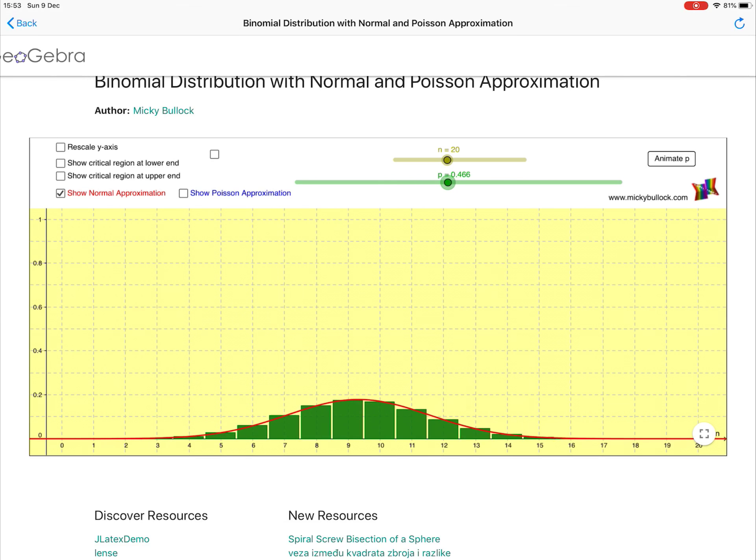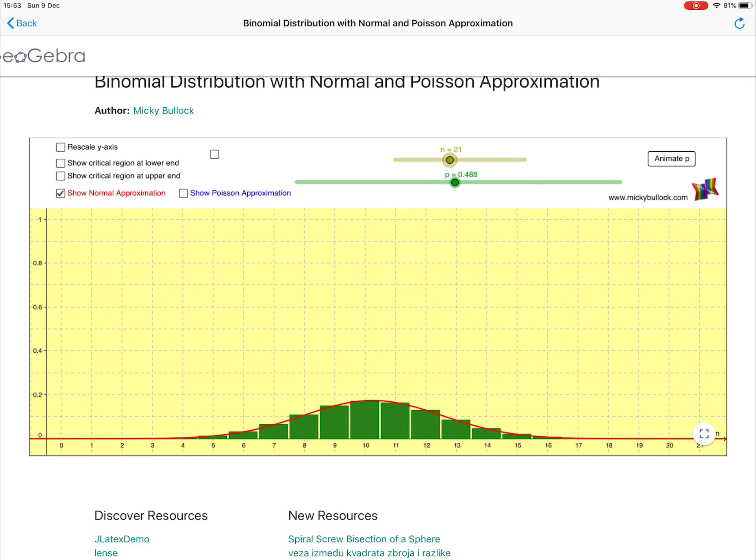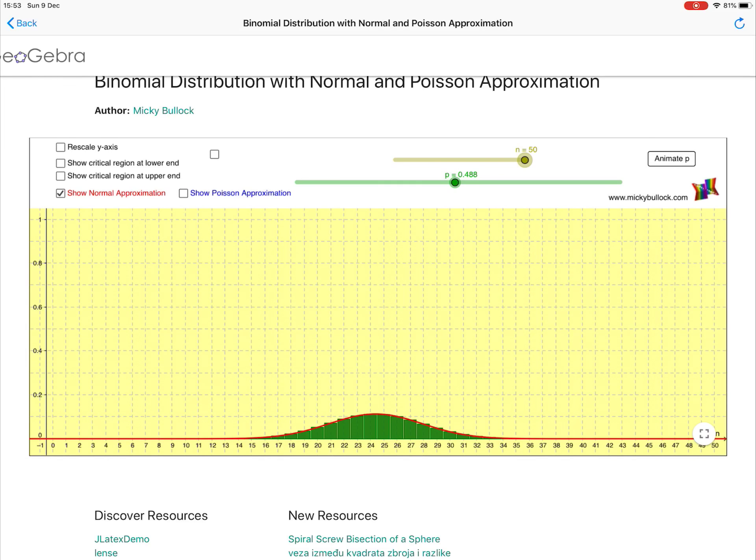So essentially, we just need P to be somewhere in the middle. Similarly, if n is too small, even if P is in the middle, we don't get a very good approximation there. So we need n to be decent size, and we need P to be somewhere in the middle.